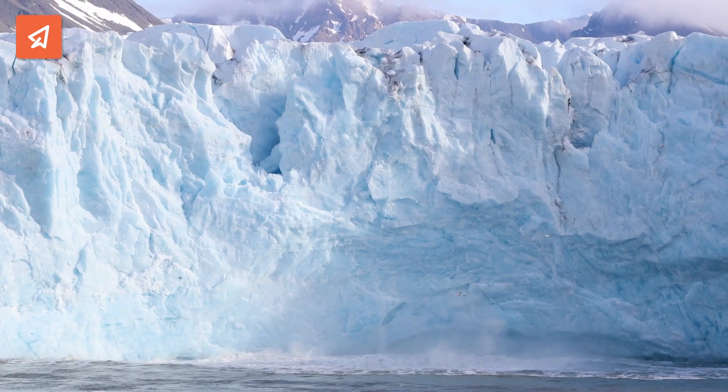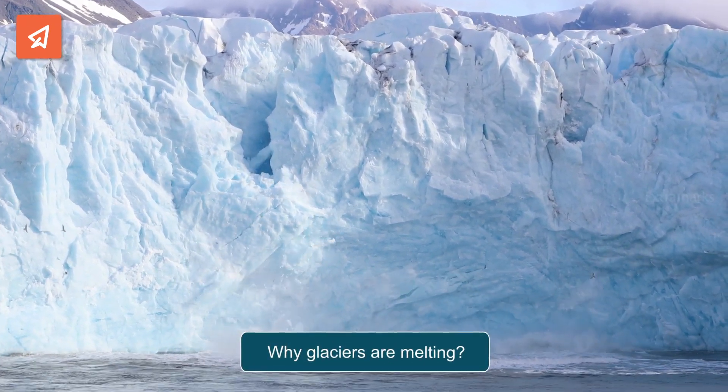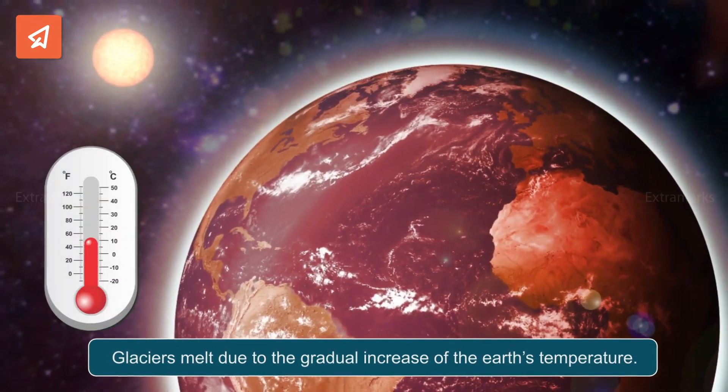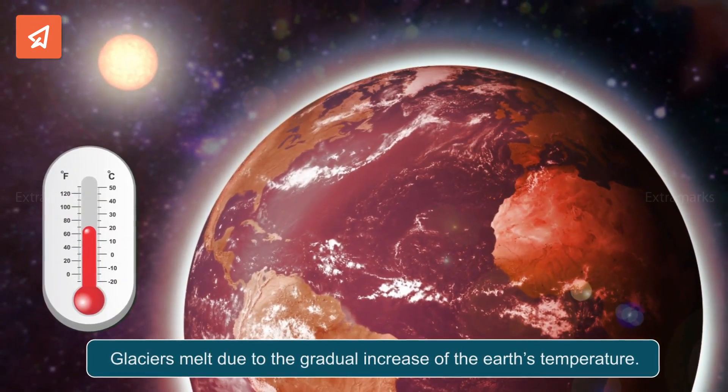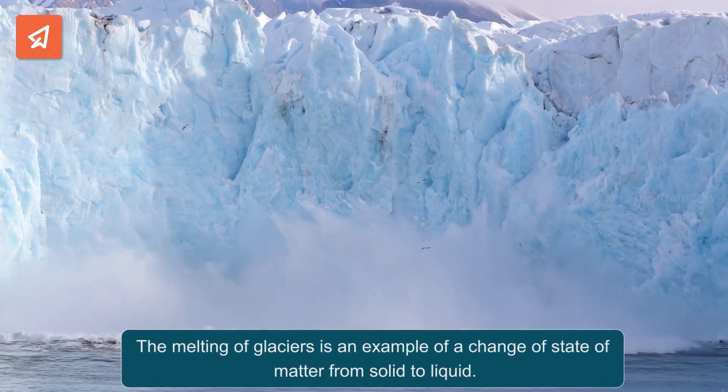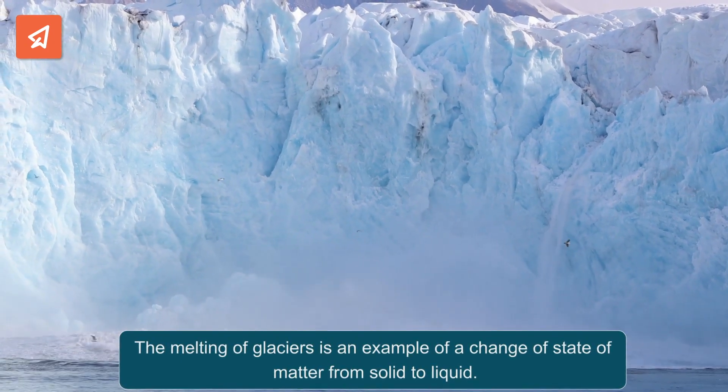The melting of glaciers is a significant environmental concern. Can you tell why glaciers are melting? Glaciers melt due to the gradual increase of the Earth's temperature. The melting of glaciers is an example of a change of state of matter from solid to liquid.